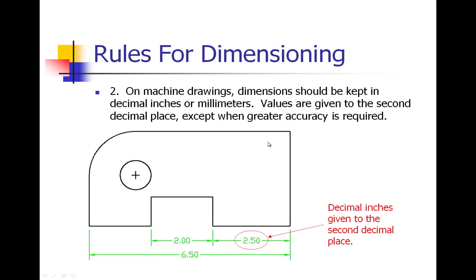Number two: on machine drawings, which are mechanical type drawings, dimensions should be kept in decimal inches or millimeters if you are working in millimeters. Values are given to the second decimal place except where greater accuracy is required. For what we do in this class, we are focusing on two decimal places. As you can see here, we have a dimension in decimal inches, 2.50, with two places after the decimal.